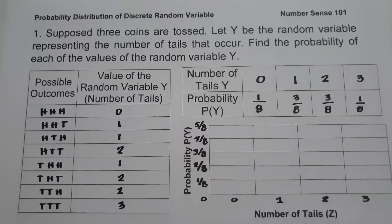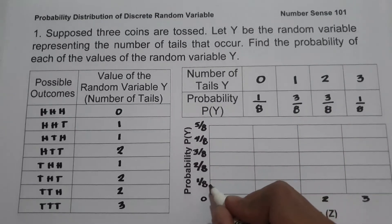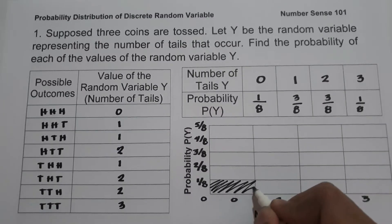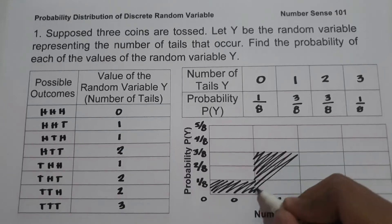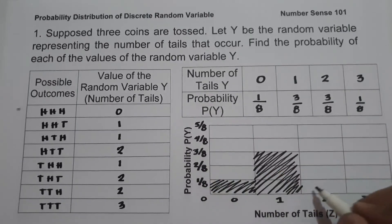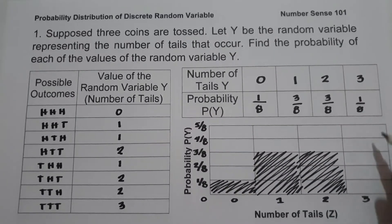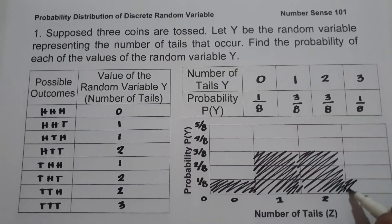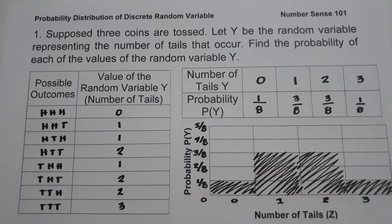We now have the probability distribution of the discrete random variable Y representing the number of tails. The last step is to make a histogram. We plot the values of Y along the horizontal axis and the probabilities along the vertical axis. Starting with 0 and 1/8, then 1 and 3/8, then 2 and 3/8, and finally 3 and 1/8. This histogram represents the probability distribution of the discrete random variable Y.